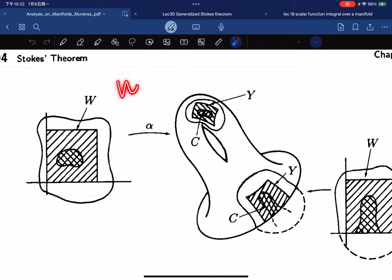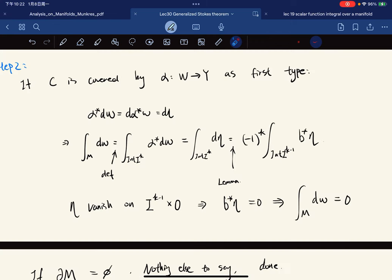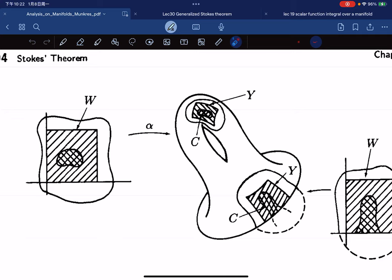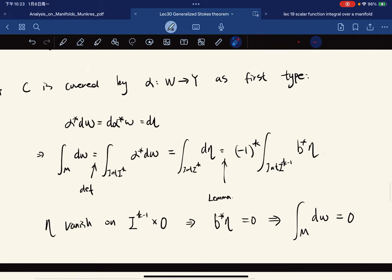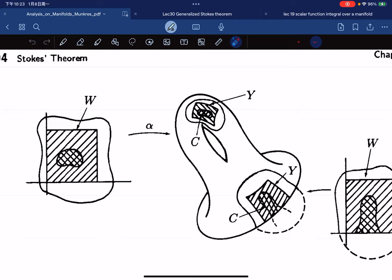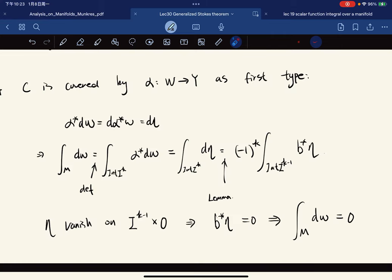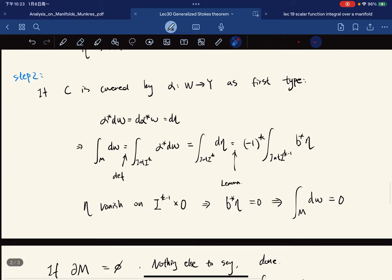Then, because this is a compact, so it cannot be, you know, and it's open in W. And W is interior, so you cannot touch the boundary, like the lines, those lines. Because W is the interior, and you're open in an open set.